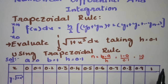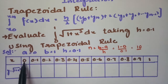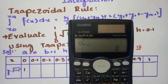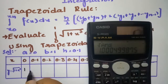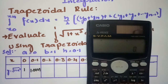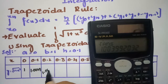We have to calculate all 10 values. The y value is √(1+x³). For x = 0.0: √(1+0³) = 1. For x = 0.1: √(1+0.1³) = 1.0049. For x = 0.2: √(1+0.2³) = 1.0039.